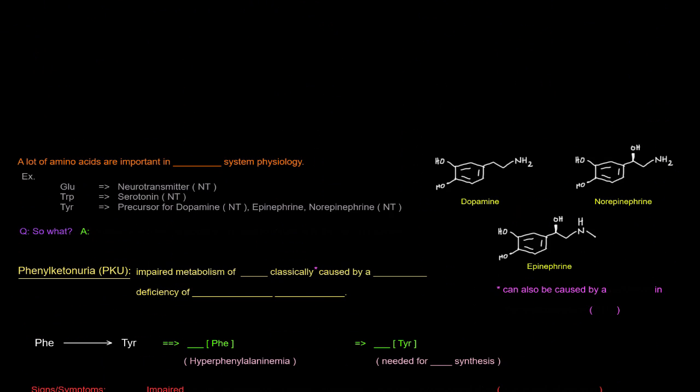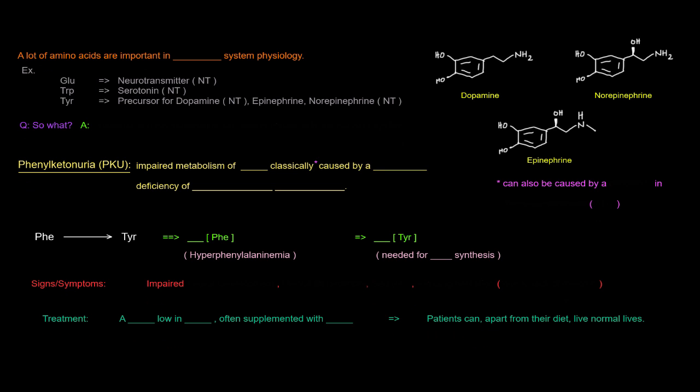So why am I bringing this up? A lot of amino acids are important when it comes to nervous system physiology. For example, glutamate is actually a neurotransmitter. Tryptophan is a precursor to serotonin, which is also a neurotransmitter. And tyrosine is a precursor for dopamine, which is a neurotransmitter, epinephrine, which is a hormone, and norepinephrine, which is a neurotransmitter and kind of like a hormone, called a neurohormone. With tyrosine, tyrosine giving rise to these three should make sense because of that aromatic group with the hydroxyl group there. These molecules all come from tyrosine.